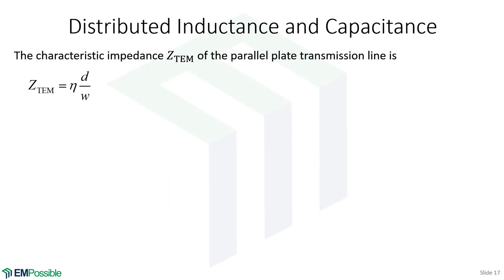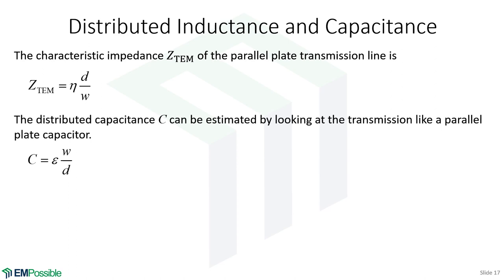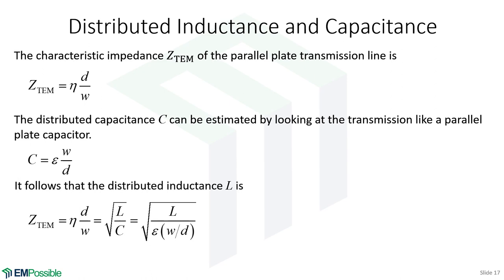We can also find the distributed inductance and capacitance. Treating the structure as a parallel-plate capacitor gives the distributed capacitance C = εW/D. Using the transmission-line relation Z₀ = √(L/C) and the impedance expression we derived, we can solve for the distributed inductance L = μD/W.